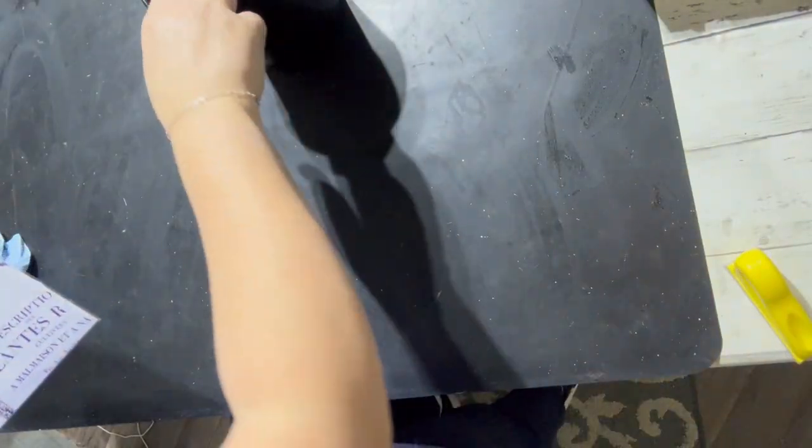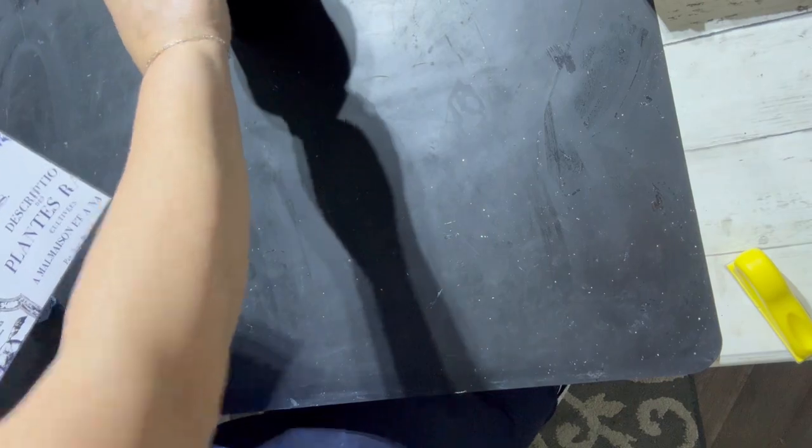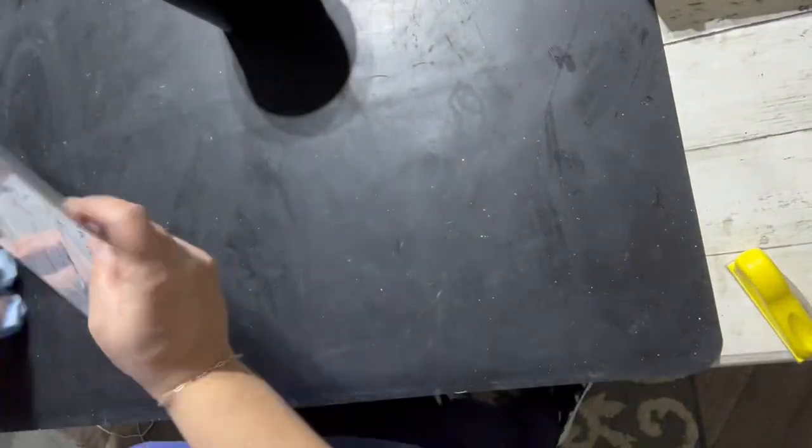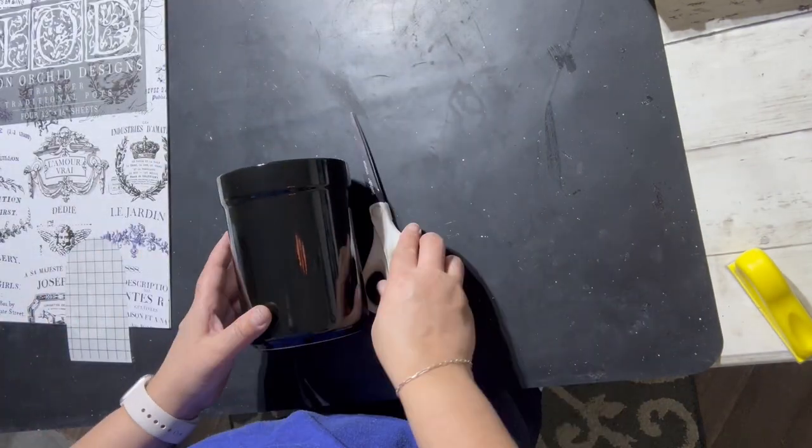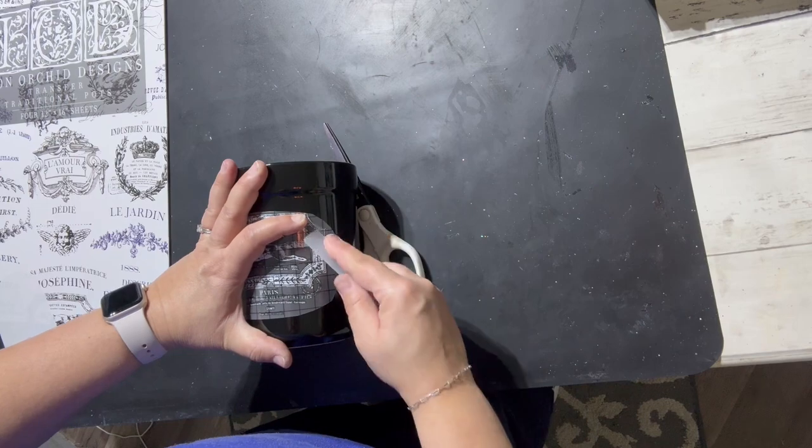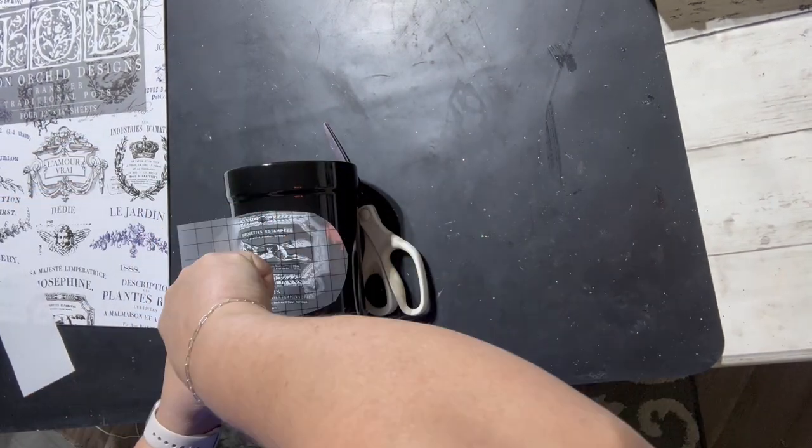This next set, I have some utensil holders downstairs, and I just picked this black one up. There's a couple creamers that I wanted to get into my booth. I'm going to use the IOD traditional pots transfer. This white transfer just stands out against that black really well.